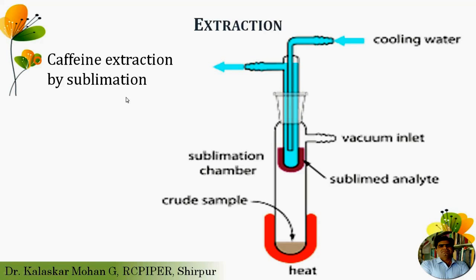Caffeine has another important property called sublimation. This sublimation property can be utilized for the separation of caffeine from medicinal plants. The dried powder is placed into a sublimation chamber and subjected to heating. At below the melting point of caffeine, it starts to convert from solid to gas. When this gas comes in contact with the cold surface — called fingers in the sublimation chamber — it starts to crystallize out, allowing one to isolate caffeine very easily from medicinal herbs.